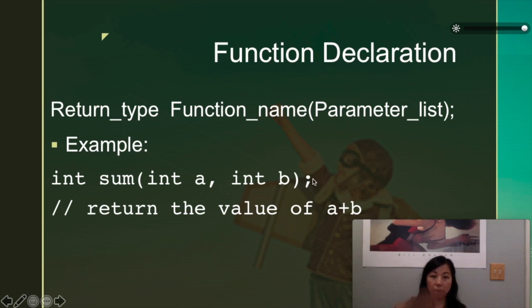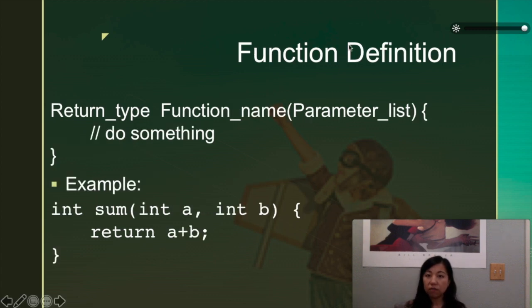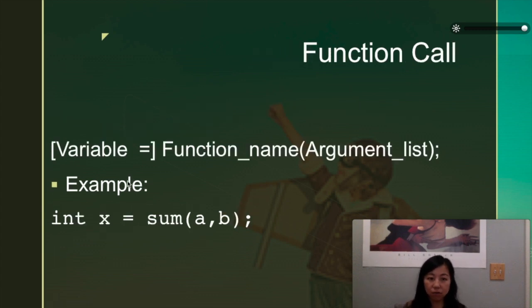And remember the semicolon afterwards. So this goes above the main function. Then we have the definition, which tells basically what the function does. As like the example that we showed, we have the same, basically the top is the same, but we use a curly bracket. And then when we have a return type of int, it's expected that we have a return statement, and then an integer, we will return that integer.